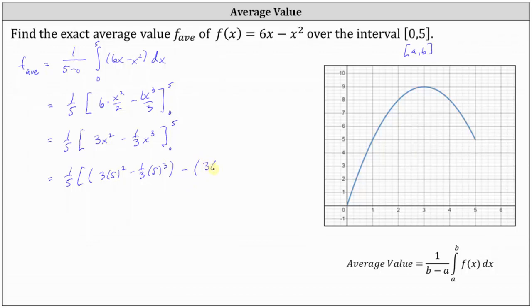Big F of 0 is going to be 0. But to show the work, we have 3 times the square of 0 minus 1 3rd times the cube of 0. This quantity here is 0 because we have a factor of 0 in each product.